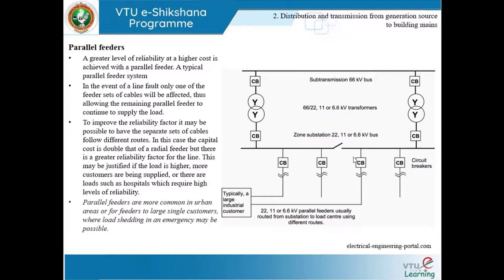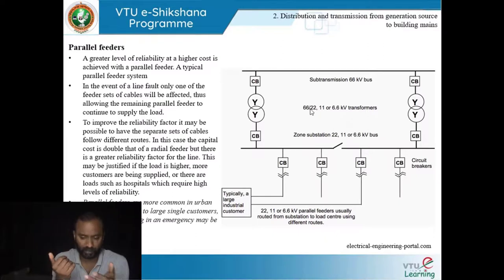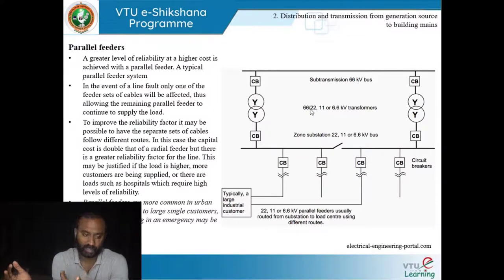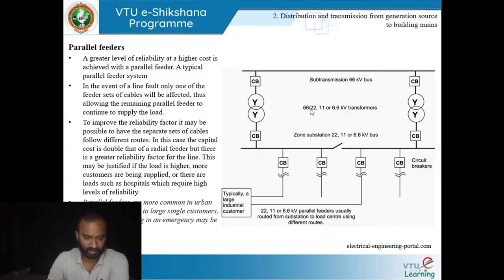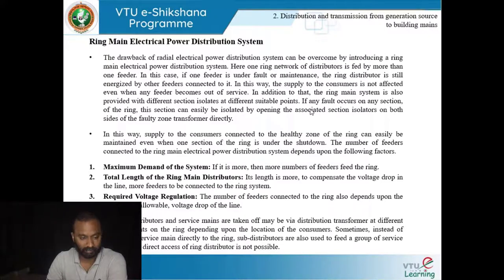The parallel feeder system is what is majorly used these days. From the substation, many feeders come out in parallel in different directions, each connected with a circuit breaker, and they further connect to consumers. In the event of a line fault, only one set of cables is affected. You can isolate one particular line or feeder, do the maintenance, and still not keep the entire consumer network in the dark. Because of this advantage it gained popularity.